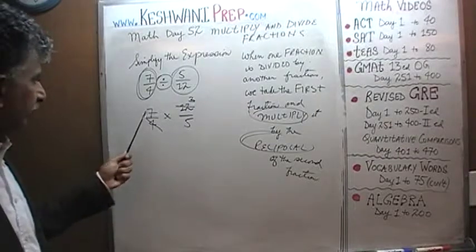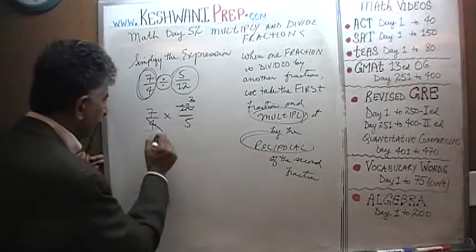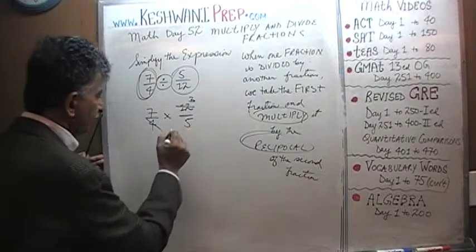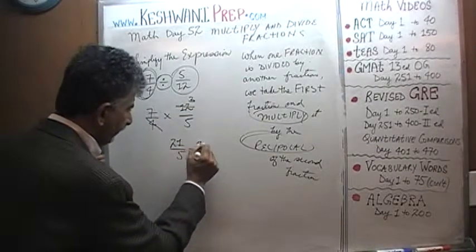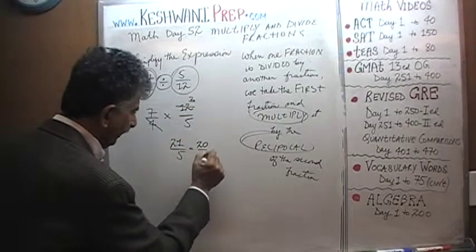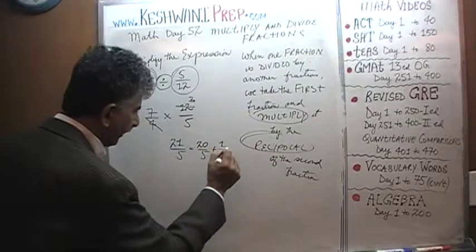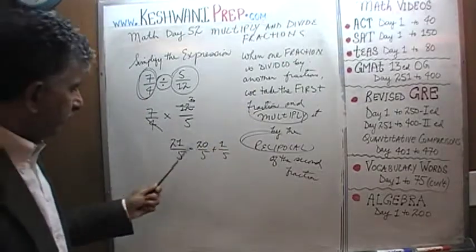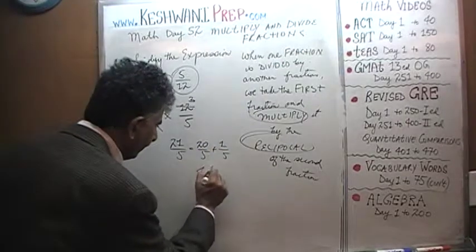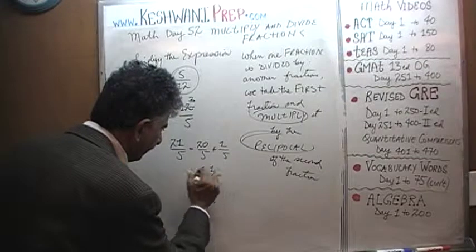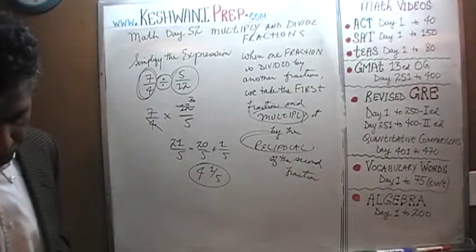That's about all we can simplify here, since the remaining numbers are prime. 7 times 3 is 21, divided by 5. That is the same as 20 over 5 plus 1 over 5. 20 divided by 5 is 4, so the final answer is 4 and 1/5.